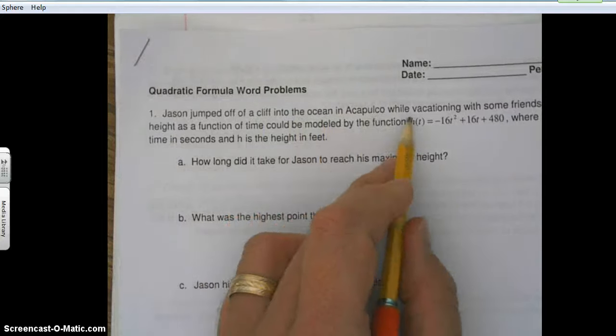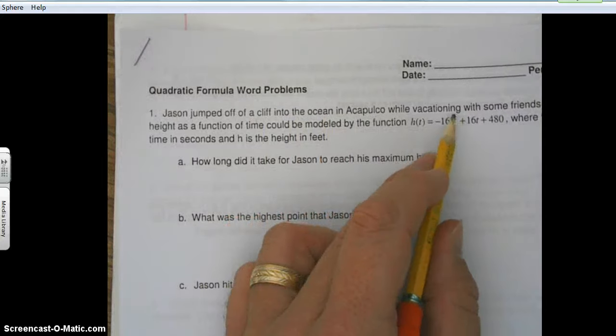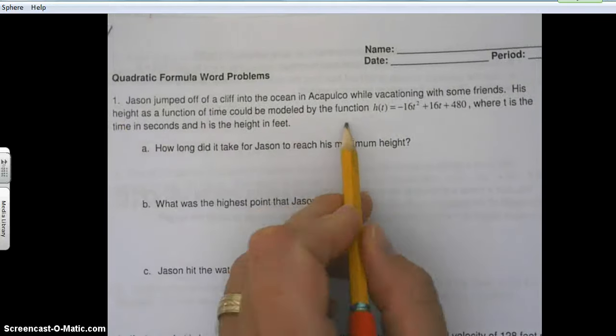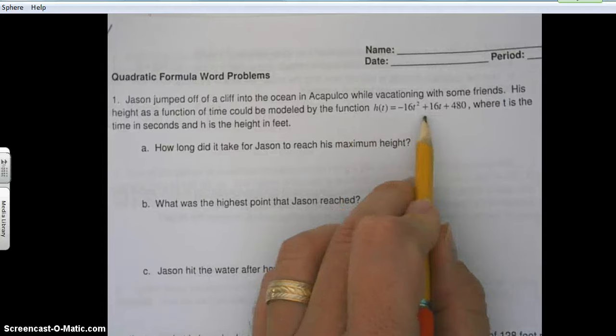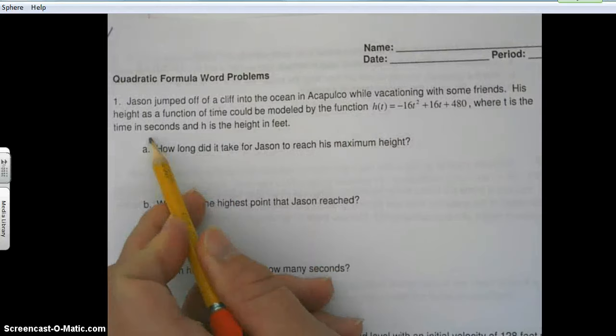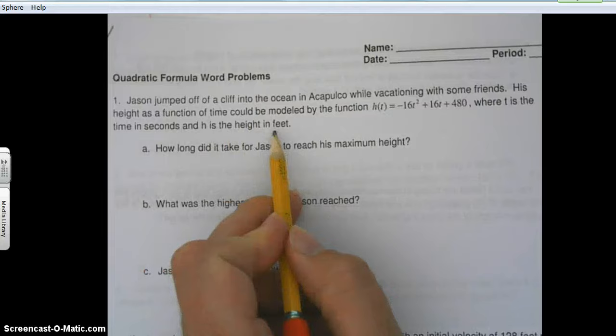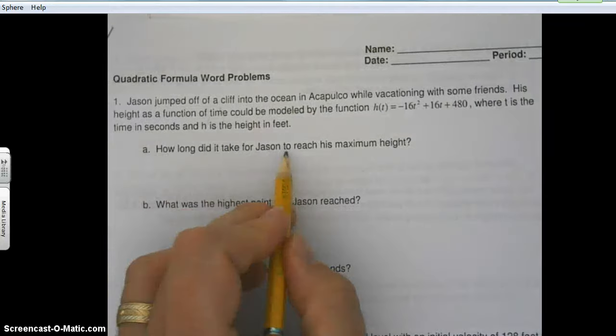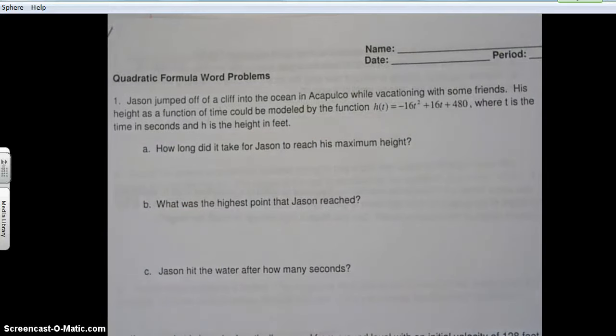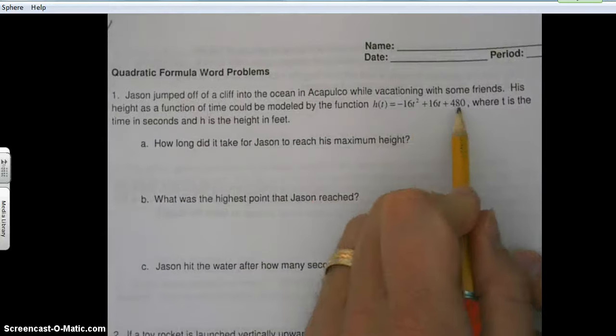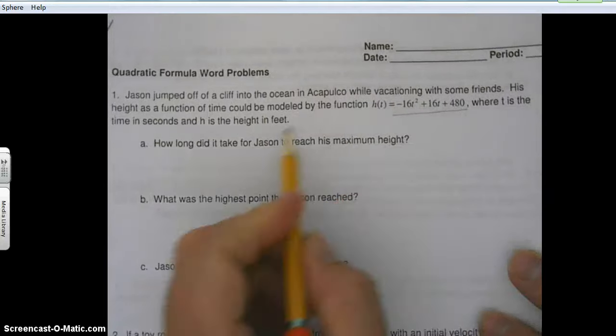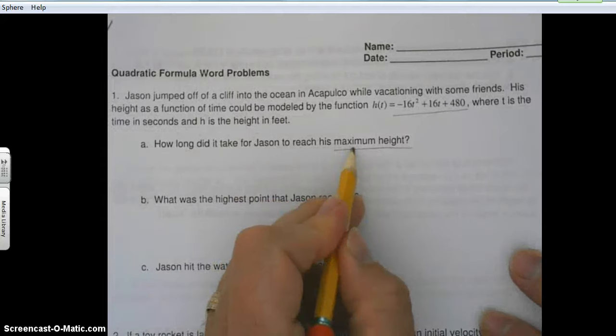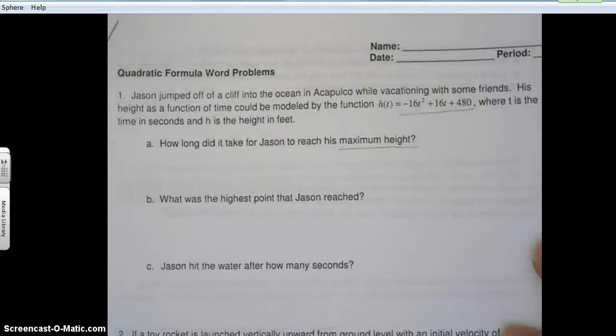Into the ocean while vacationing, his height as a function of time is modeled by this function where t is the time in seconds and h is the height. How long did it take Jason to reach his maximum height? So what we want to do is take this equation and find the maximum height. Anytime you're looking for a maximum or minimum, we want to be in vertex form.